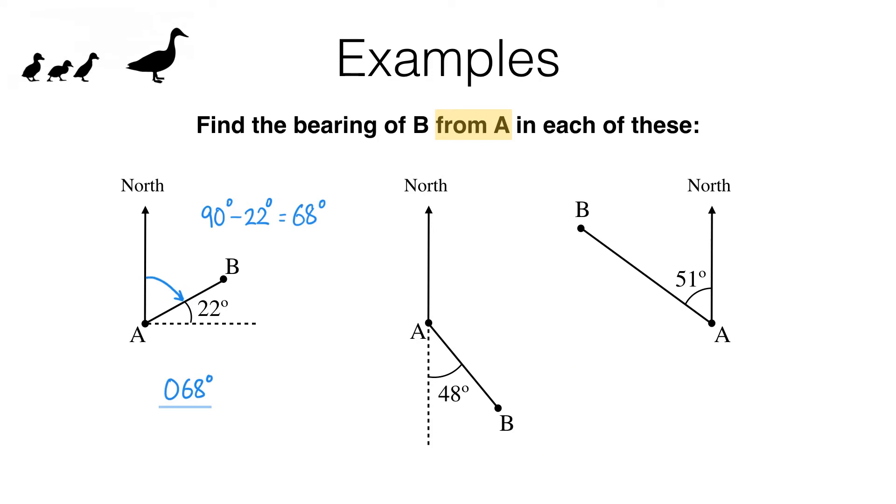In this next one, again imagine we're at A and we are pointing north. What clockwise angle do we need to turn so that we are facing B? Well that is this angle here. Now we've got a straight line here which means this whole angle is 180 degrees. This part is 48, so the angle we are looking for is 180 minus 48, and that gives us 132 degrees. So the bearing we're after is 132 degrees. Notice 132 is already a three-digit number, so we don't need to put in any leading zeros at the beginning.